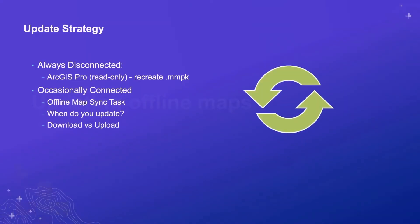Once we've taken maps offline, how do we keep them up to date? In an always-disconnected approach using the mobile map package from ArcGIS Pro, you simply recreate the mobile map package and redeploy it to the device. In the occasionally connected scenario, we have an offline map sync task. This can take the offline map generated in either the on-demand or preplanned workflow and compare it to the source web map, synchronizing things as appropriate. You have control over when and how that sync happens — do you download updates only, push edits back up, or do bidirectional sync? You can get fine-grained control layer by layer.